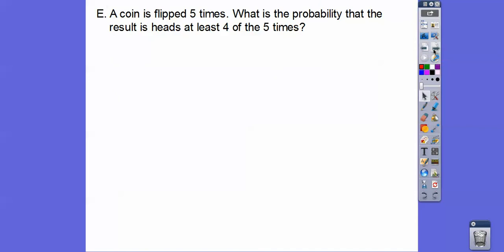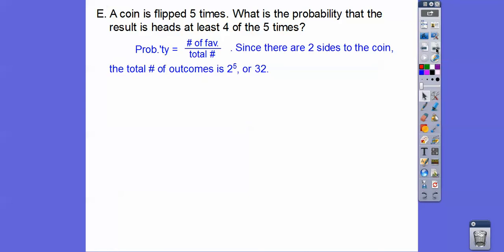Here's another one. A coin is flipped five times. What's the probability of the results of getting at least four heads? Getting the result is heads at least four of the five times. So probability. Since there's two sides, we're flipping it five times. 2 to the fifth gives us 32 different outcomes. That's our bottom number.